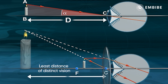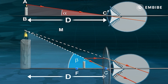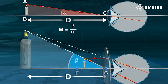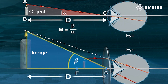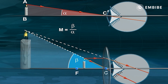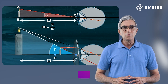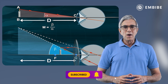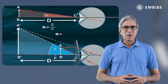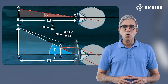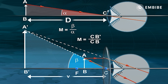At the least distance of distinct vision, suppose beta is the angle subtended by the image at the eye. Then the magnifying power M of a simple microscope is given by beta upon alpha — that is, the ratio of the angle subtended by the image at the eye to the angle subtended by the object at the eye, when both are at the least distance of distinct vision. Therefore, M = beta / alpha. The magnifying power can also be given as the ratio of the image size to the object size: M = A'B' / AB, or M = CB' / CB.